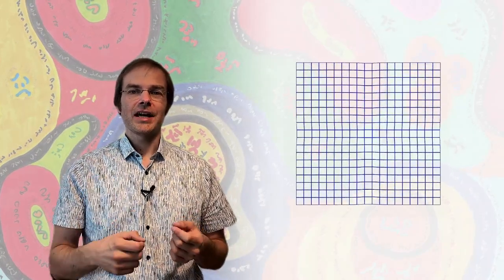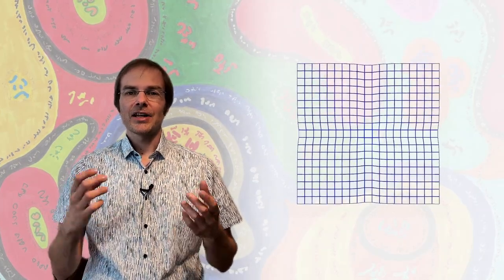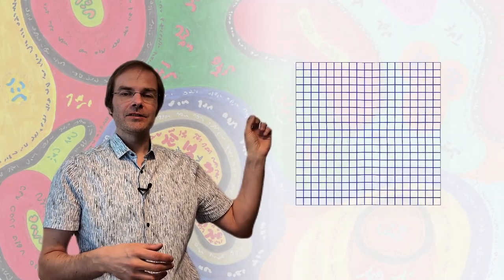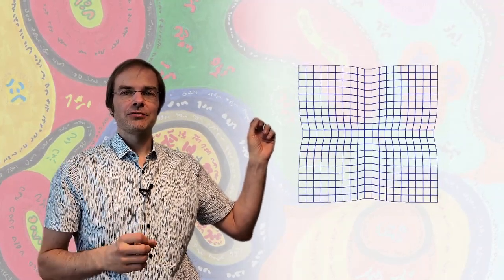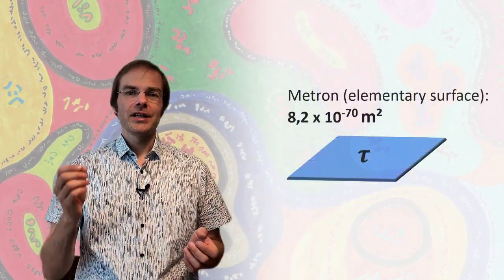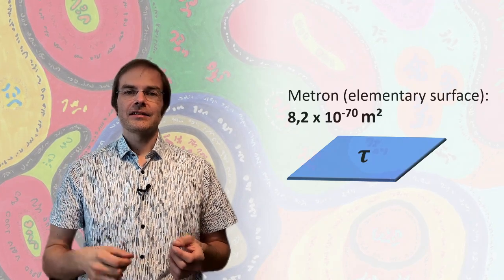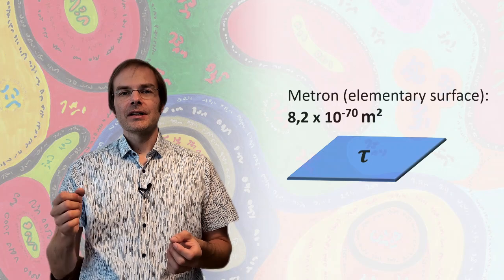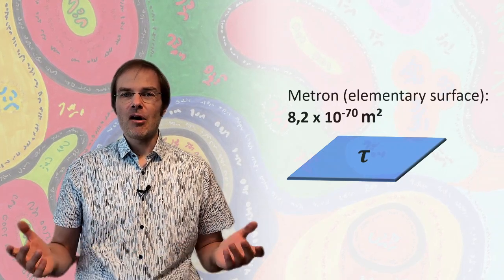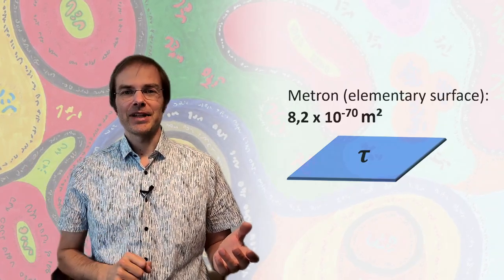If you are interested how, in detail, he managed to derive the existence and the size of these surfaces, have a look at this video I have presented his way, or rather an easier alternative way that leads to this conclusion. Suffice it to say for now, he called these tiniest surfaces metrons and their size is at the present age 8.2 times 10 to the power of minus 70 square meters. And now I have almost ruined my punchline for this video by saying at the present age, but I am coming to that later.